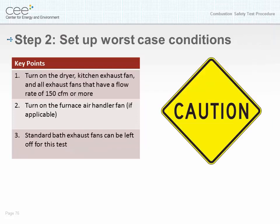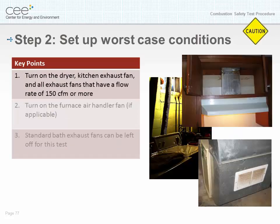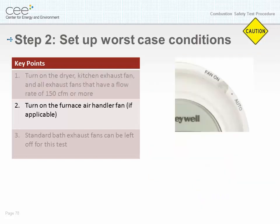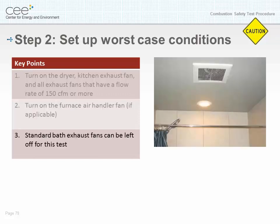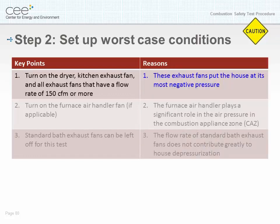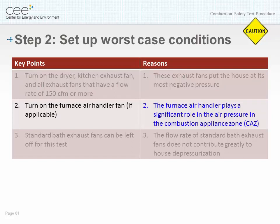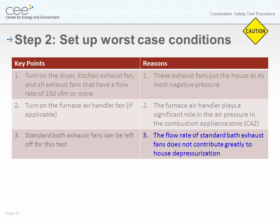Step two: set up worst case conditions. Key points: number one, turn on the dryer, kitchen exhaust fan, and all exhaust fans that have a flow rate of 150 CFM or more; number two, turn on the furnace air handler; number three, standard bath exhaust fans can be left off for this test. The exhaust fans put the house at its most negative pressure. The furnace air handler plays a significant role in the air pressure in the combustion appliance zone. The flow rate of standard bath exhaust fans does not contribute greatly to house depressurization.